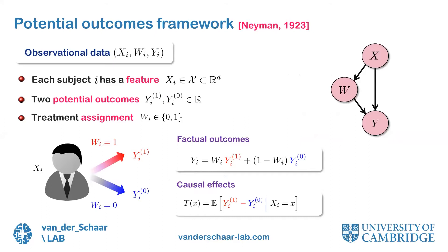The mathematical framework we use to deal with this setup is the potential outcomes framework. In this framework, we have an observational dataset comprising three variables: XI, WI, and YI. XI is the features or individual traits of a given subject I. For each subject, we have two potential outcomes: YI1 and YI0. YI1 corresponds to the subject's outcome with the treatment, and YI0 corresponds to their outcome without the treatment. For each subject, we observe a certain treatment assignment WI, a binary indicator of whether the subject has been assigned the treatment.